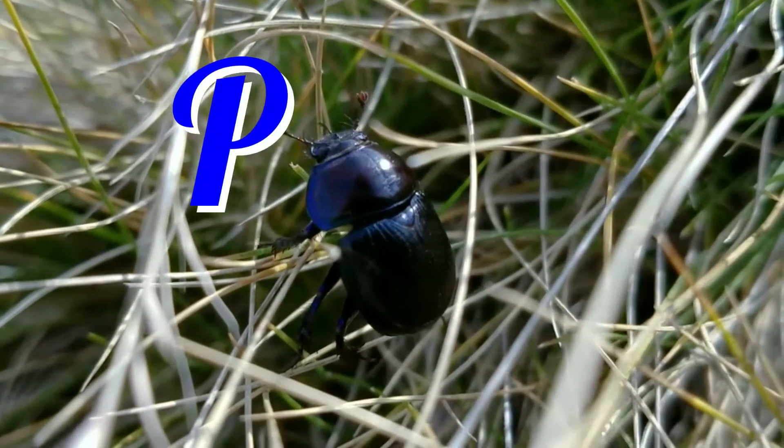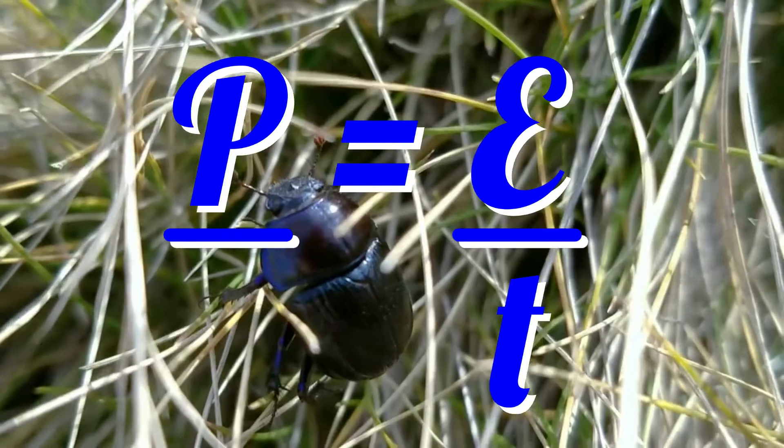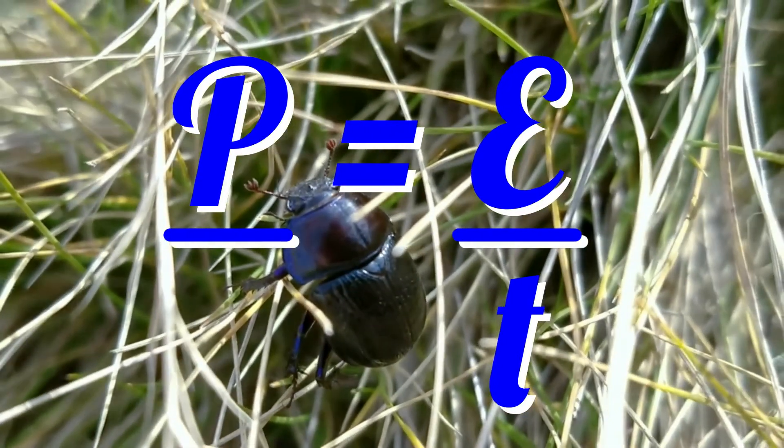P equals E over T. Power in watts equals energy in joules divided by time in seconds.